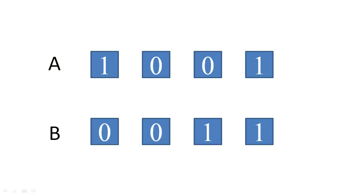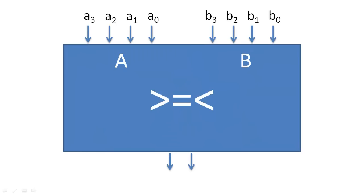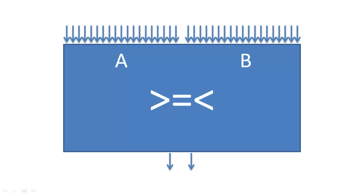The circuit we will design compares two unsigned binary numbers and outputs which number is greater. We will index each bit of these numbers from least to greatest weight. To compare these two 4-bit numbers, we could design a circuit that compares all 8 bits at once. However, that scale of design can be very cumbersome. For example, we would not want to compare two 64-bit numbers at once and design a 128-input circuit in one step.